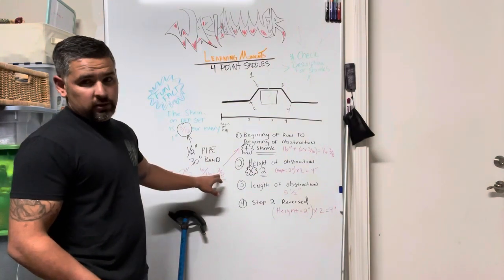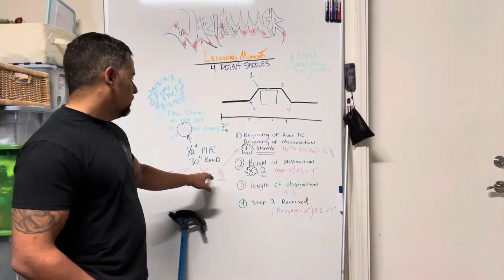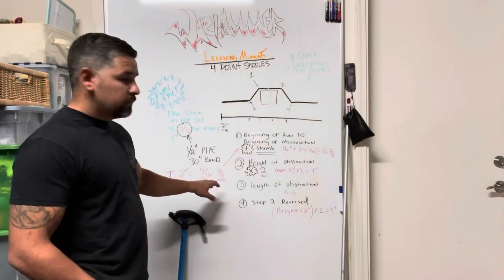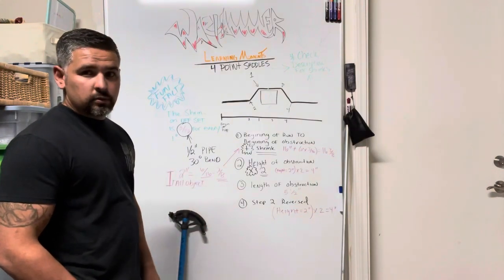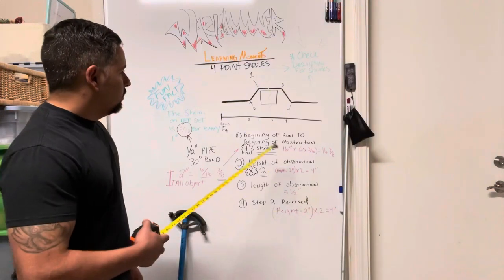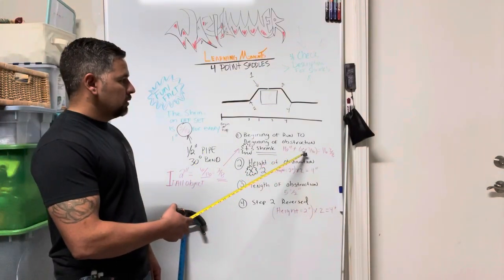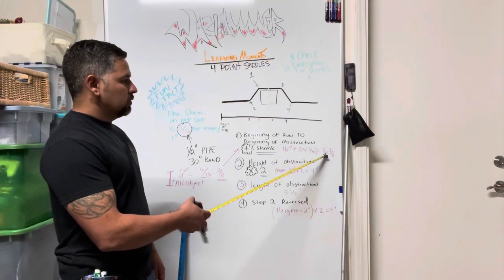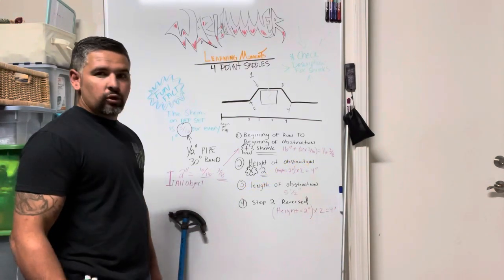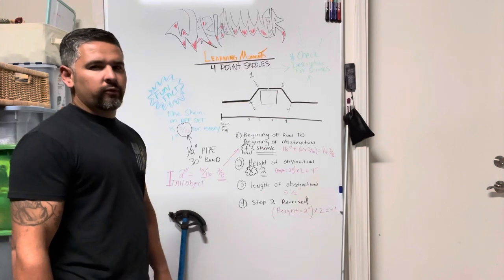When you break that down and reduce it, it's going to be 3/8 because you basically divide that by 2. So 16 inches away plus our shrink is going to get you 16 and 3/8 inches. So that's going to be your first mark.